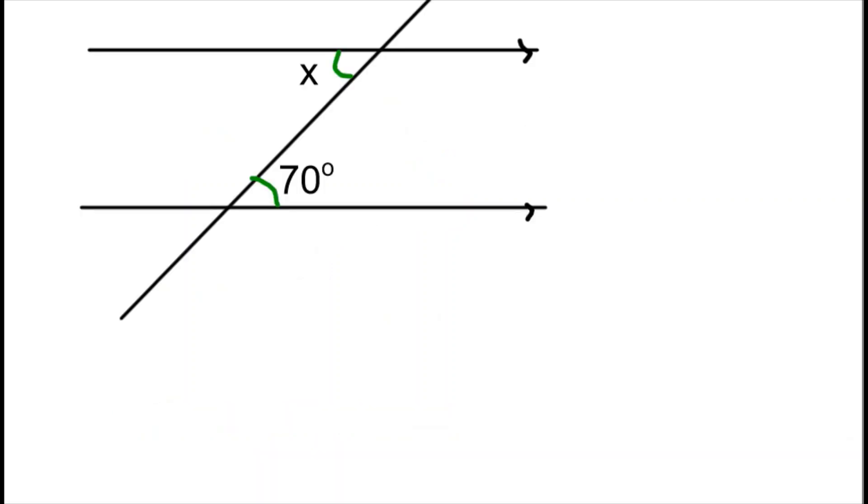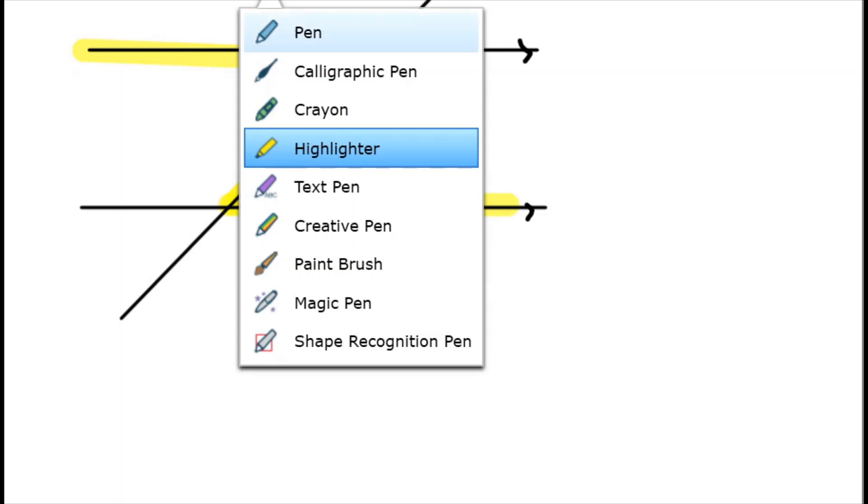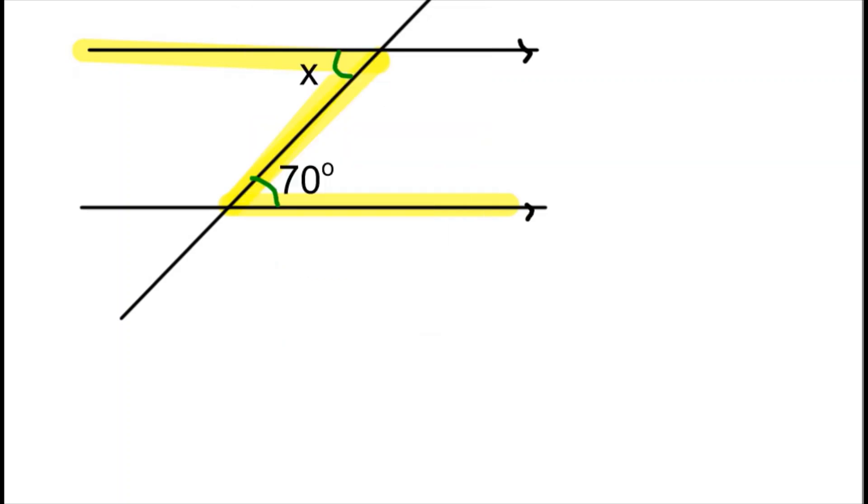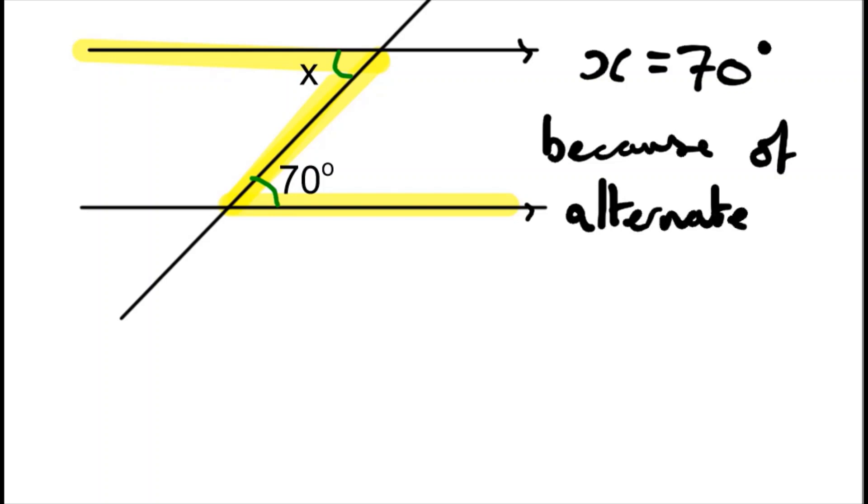So if we have an example like this, hopefully we can see straight away that we have an angle X and an angle of 70. We've created that Z shape. So we can say X equals 70 because of alternate angles.